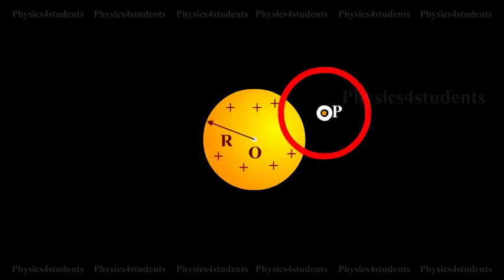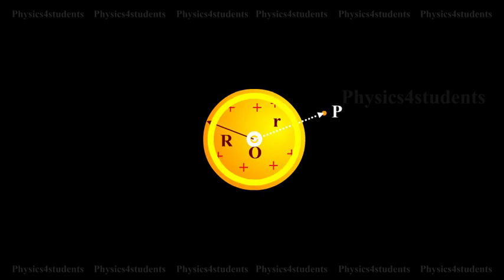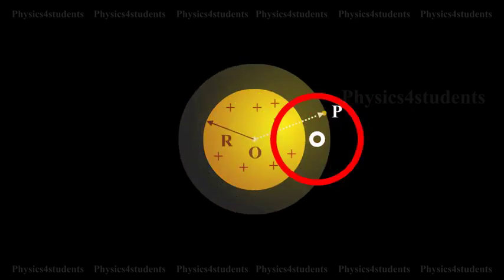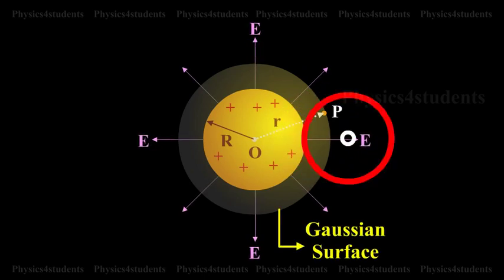Let P be a point outside the shell at a distance r from the center O. Let us construct a Gaussian surface with r as radius. The electric field E is normal to the surface.